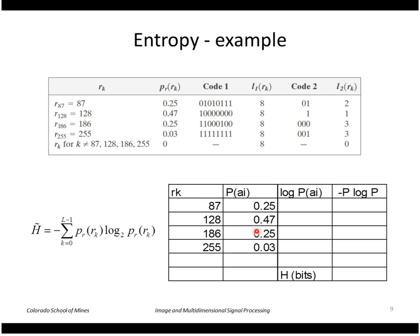Here's our gray levels, probabilities. So I need to compute the log here and I'll take the probability P times the log here and then I'll add it all up.